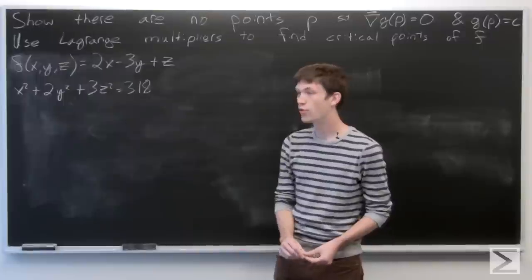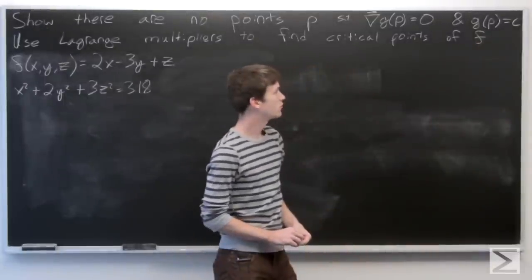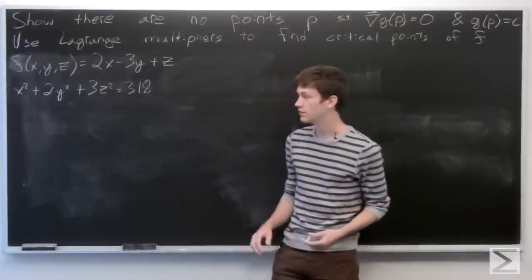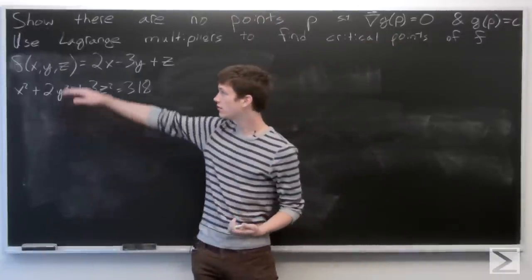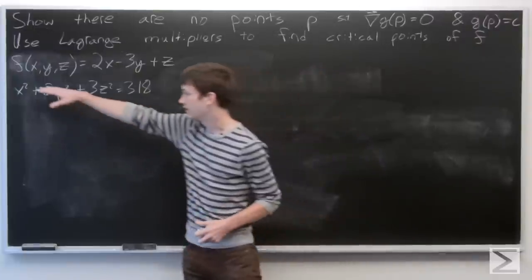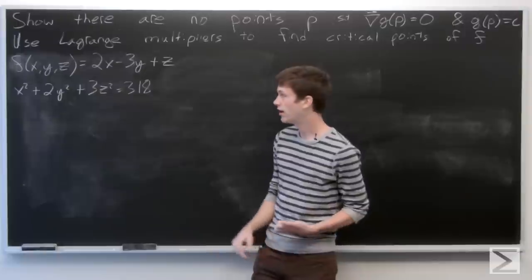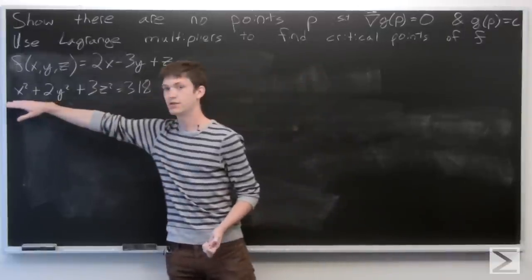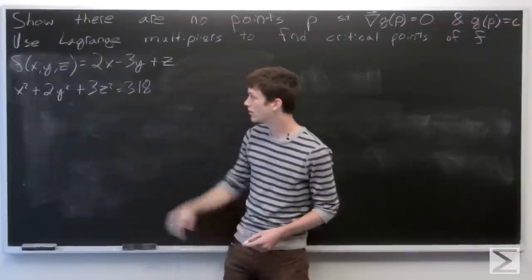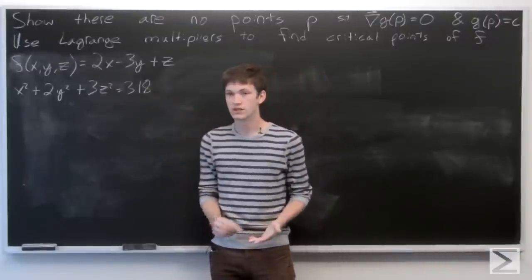In this problem, we're asked to show that there are no points p such that it satisfies our constraint equation g equals c, and that the gradient vector of g at p is equal to 0. After we've shown that, we can use Lagrange multipliers to find critical points of f, where f is given as f(x, y, z) = 2x - 3y + z. Our constraint equation is g(x, y, z) = x² + 2y² + 3z², and we're looking at the level set where g equals 318.